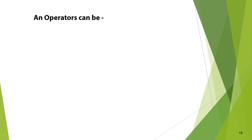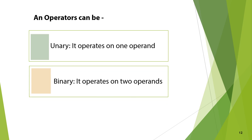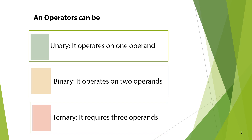Operators in expressions can be unary — operating on one operand. Binary operators operate on two operands. And ternary operators require three operands to perform some operation or action.